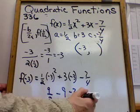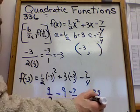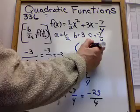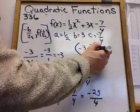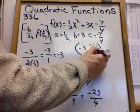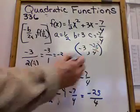And when you figure that out, you should get negative 25 fourths. Use your calculator if you have to. So here's the other part of the ordered pair, negative 25 fourths. And that's the answer for the vertex.